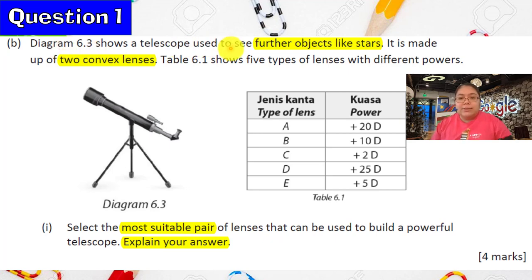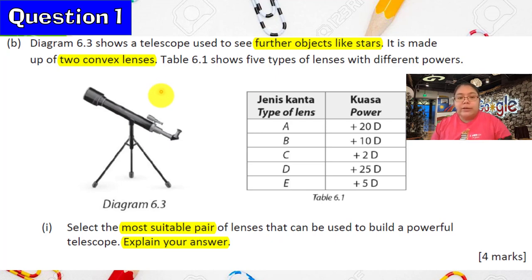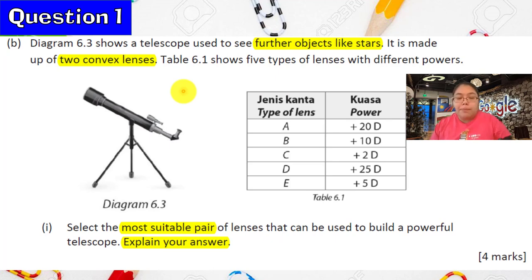Now we continue with part B. They show a telescope used to see distant objects like stars — it's made of two convex lenses. Before answering this question, we need to think about the structure of the telescope. It's built from two convex lenses: one is high power, one is low power. F0 and F1 are the focal lengths. For a telescope, F0 must be greater than F1 — the focal length for the objective lens is longer compared to the eyepiece lens. So the objective lens has low power and the eyepiece has high power.